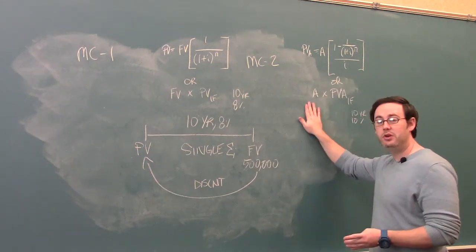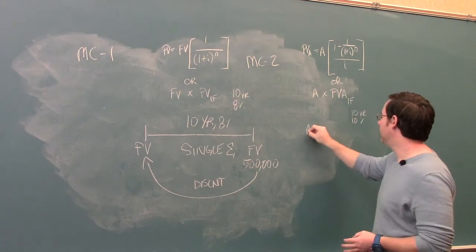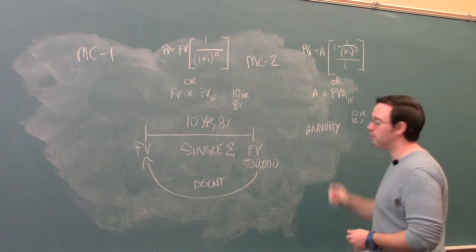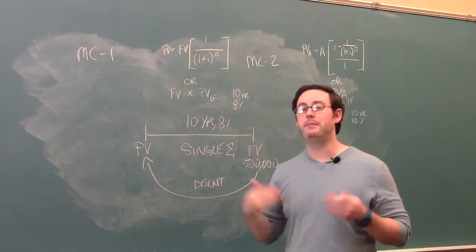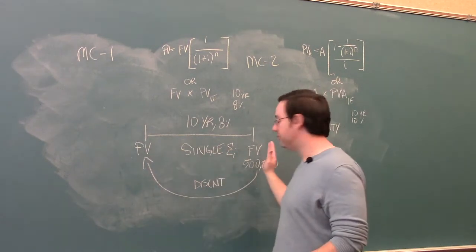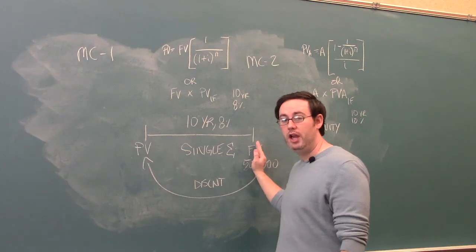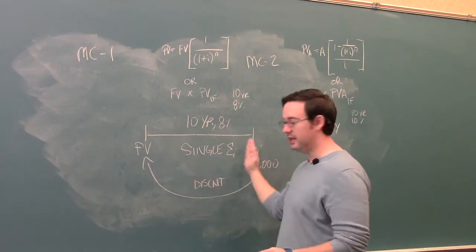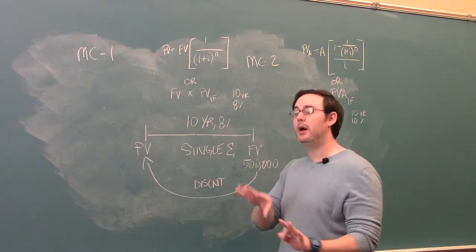In MC2, our next problem, we're going to deal with what we call an annuity. An annuity represents an equal, consistent payment. So instead of getting $500,000 at a point in the future, we instead have equal, consistent payments throughout the entire period. And we'll talk about that one in a minute.